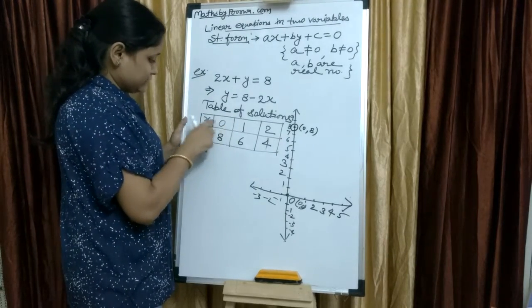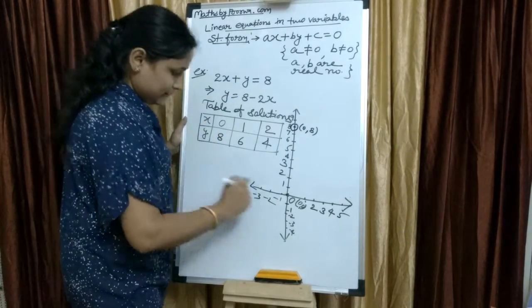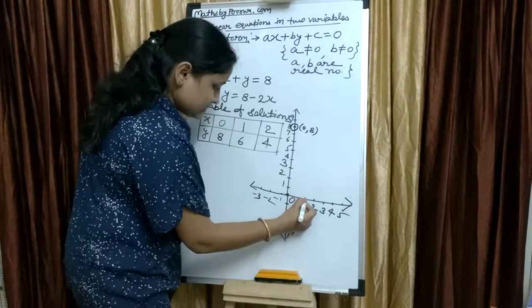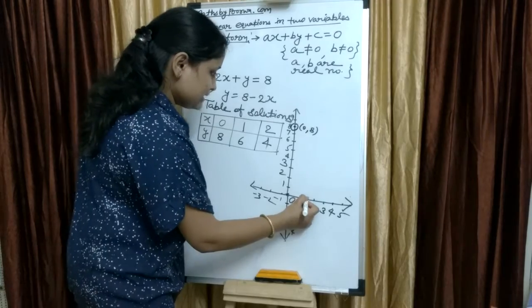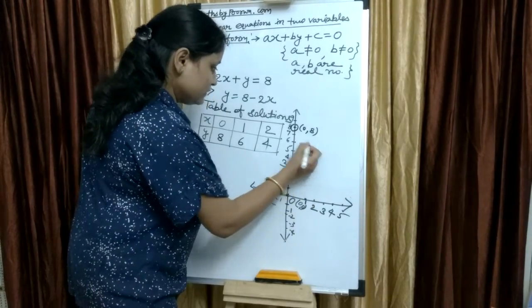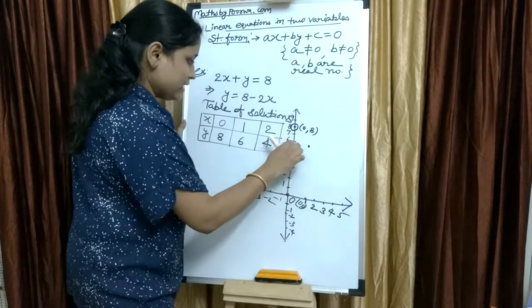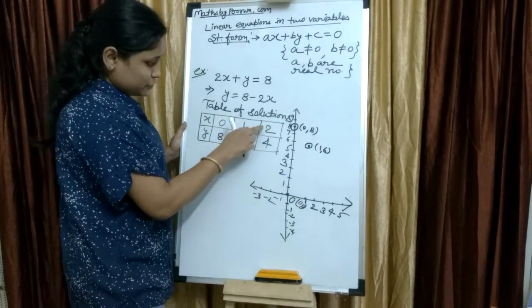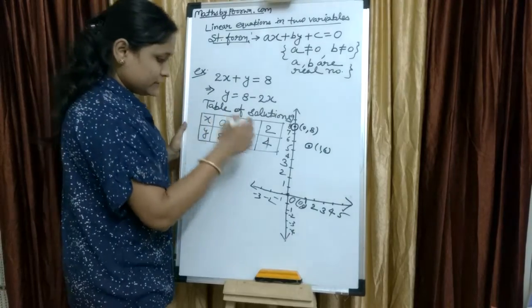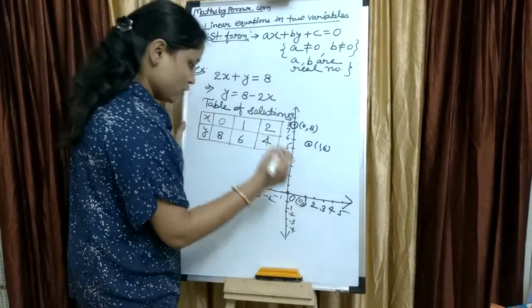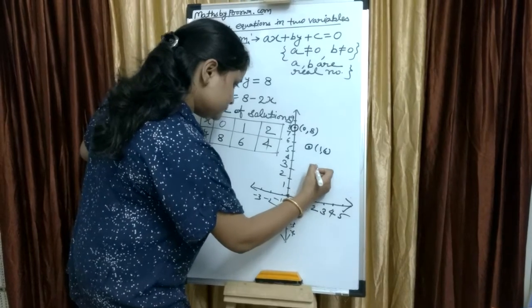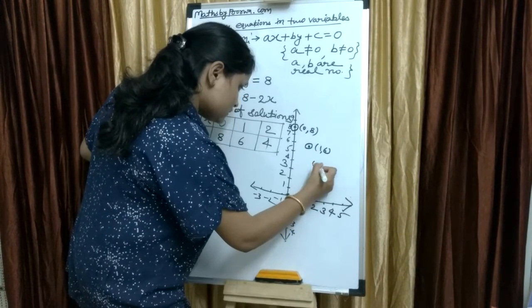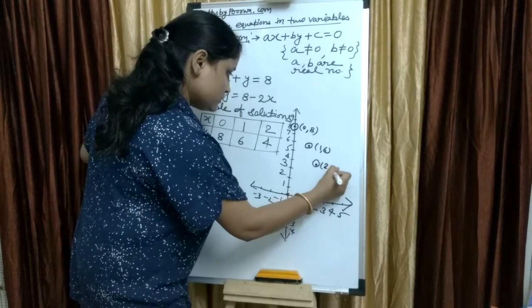Now, second point. 1, 6 means when x is 1. x is 1 means this. Now, then y is 6. x is 1 and y is 6. This is 1, 6. Now, next point is 2, 4. x is 2, then y is 4.